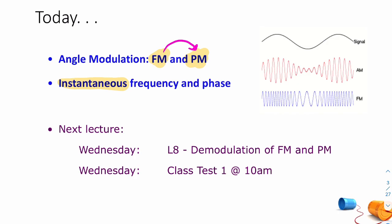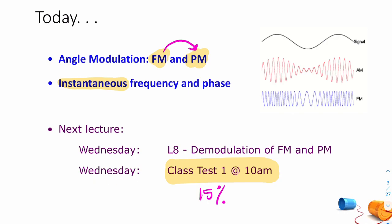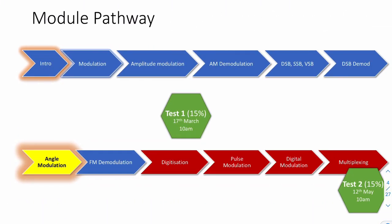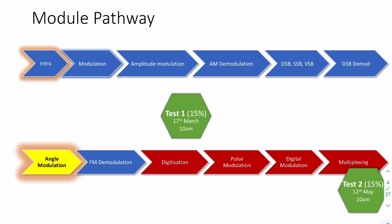Later in the week, on Wednesday night, I will record Lecture 8, where we'll talk about demodulation of FM and PM. That will be available Thursday because on Wednesday you will be completing the first class test. Remember, that's worth 15% of the module and there's no repeat opportunity. Make sure you're available at 10 o'clock on Wednesday the 17th of March. If you can't make it, get in touch with me before the test. The test covers Lectures 1 through 6, up to and including demodulation of DSB. Today's Lecture 7 is not included.